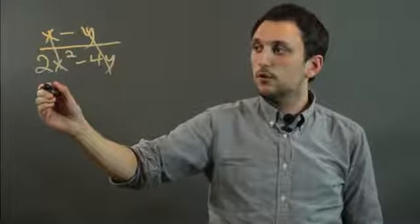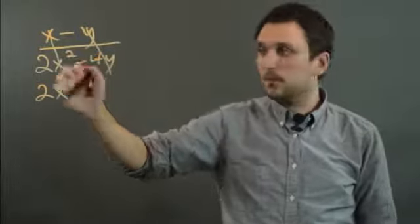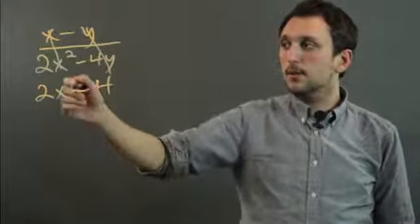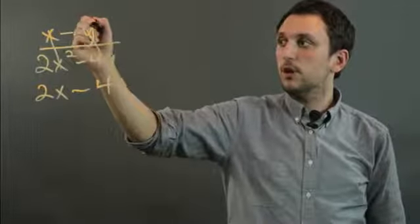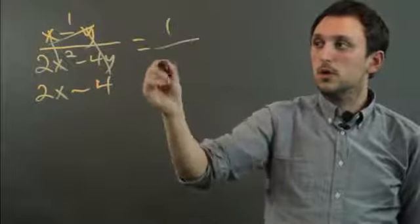We say, okay, now it is just 2x, because there's one x left over when you divide x squared by x, minus 4. And on top, it would be just 1. So we end up with 1 over 2x.